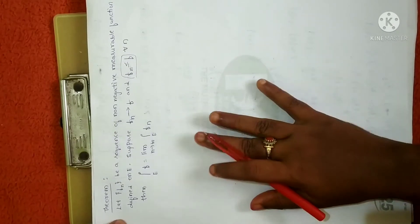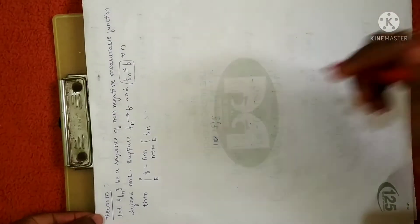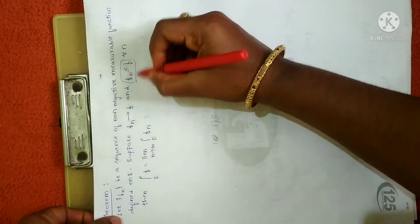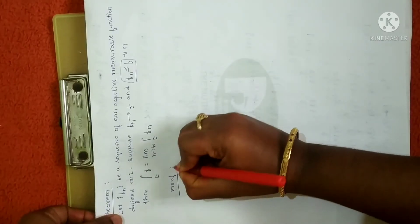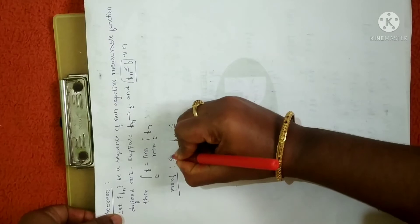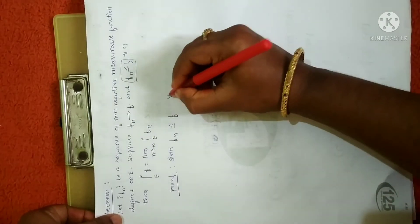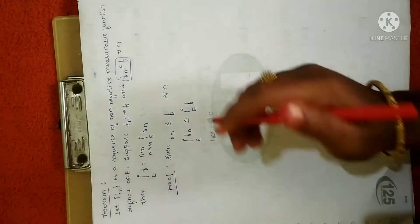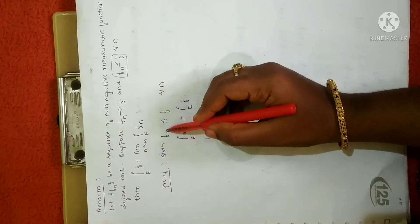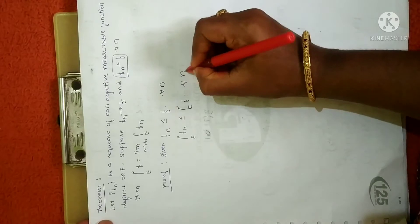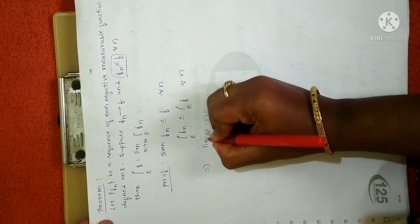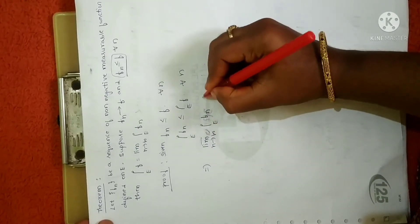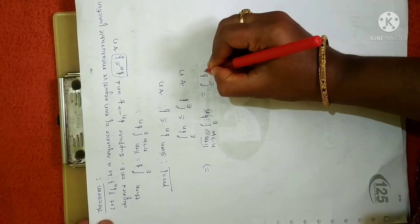Now let us prove this theorem. It is clearly stated that fn is a sequence of non-negative measurable functions defined on E. We are given fn is less than or equal to f for all n. Taking the integral on both sides gives us the inequality. Now let me take the limit supremum on the left-hand side, so I can write limit supremum as n tends to infinity of the integral over E of fn, which equals the integral over E of f.